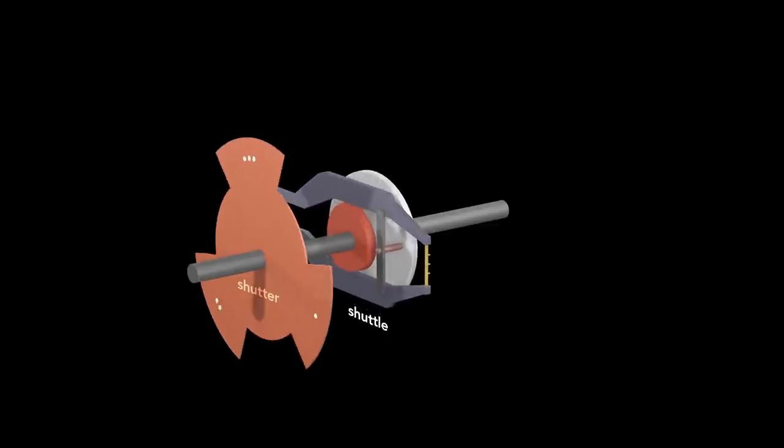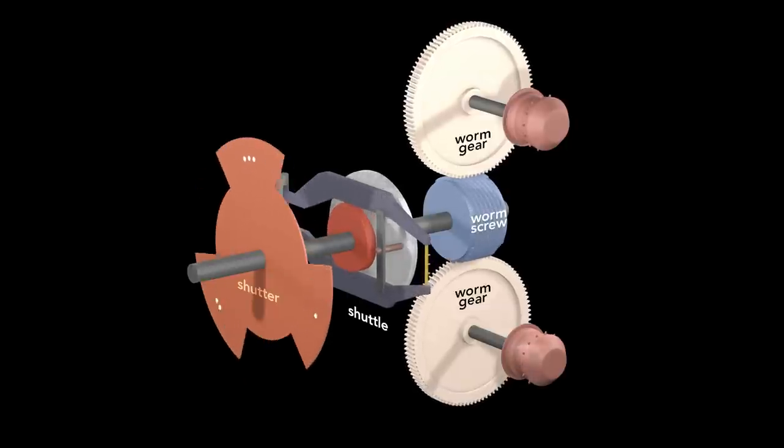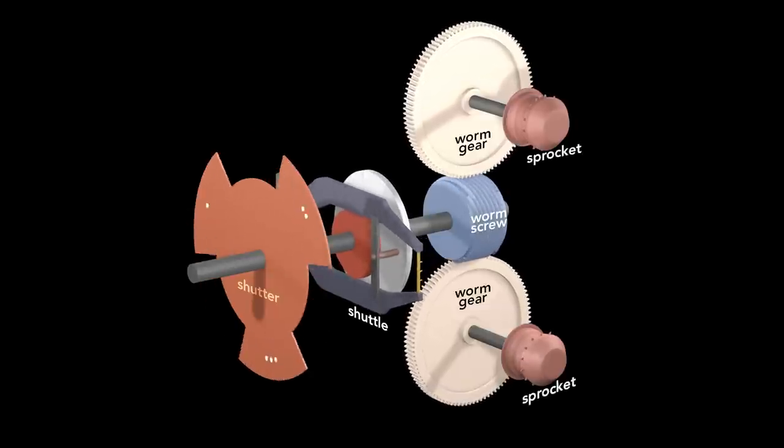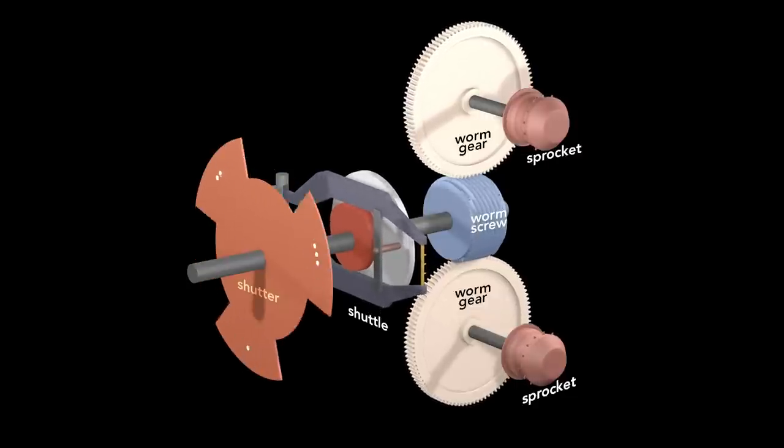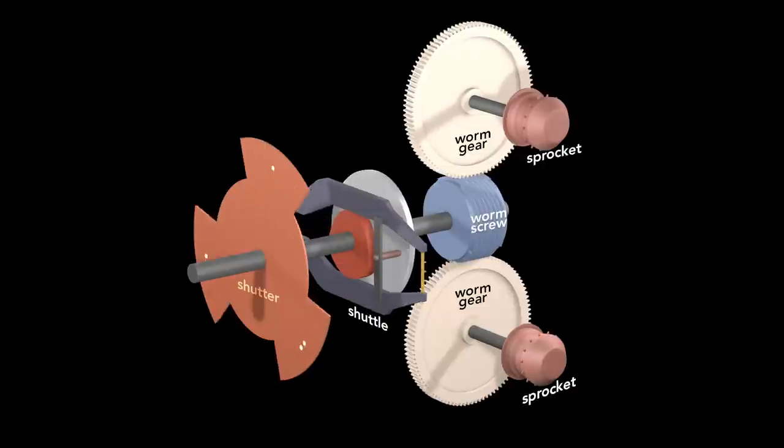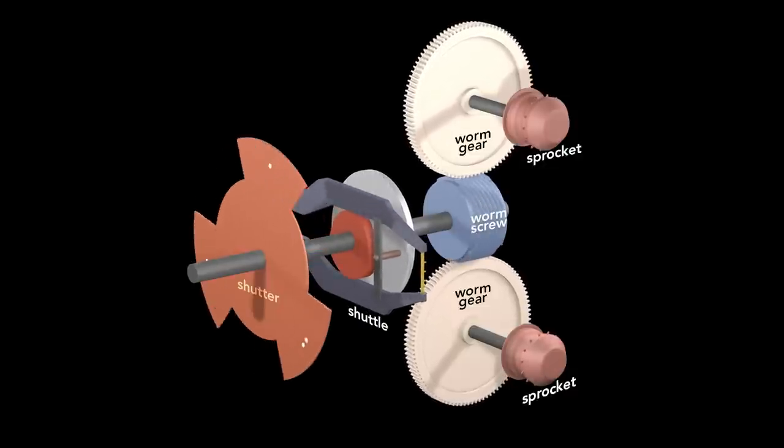Behind the shuttle is a worm screw that drives two gears that are coaxial with the top and bottom sprockets. So this means that with every rotation of the axle, the shutter blocks and flashes light three times, the shuttle pulls down a single frame, and the worm screw rotates the gears and sprockets 1/14th of a revolution.